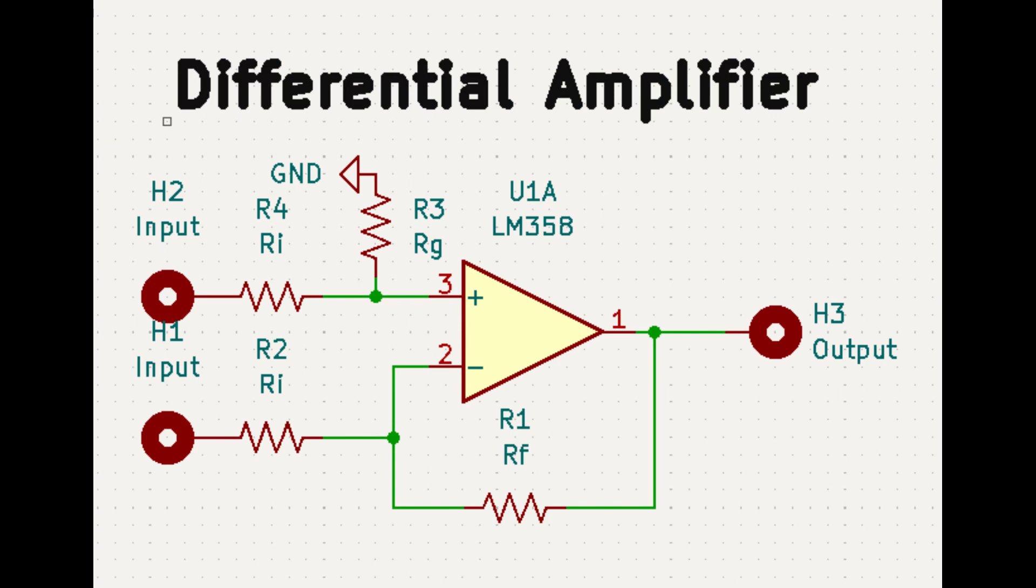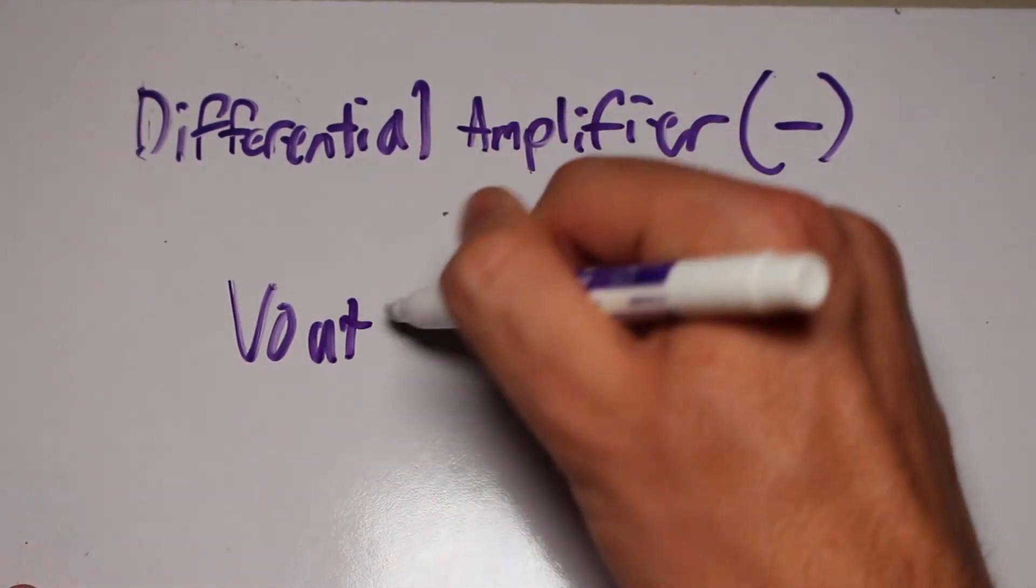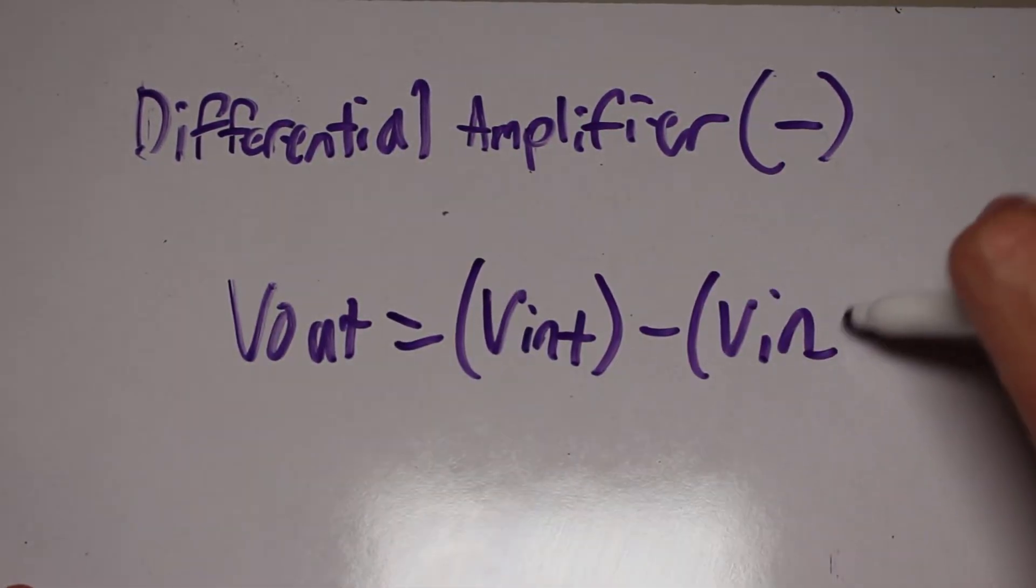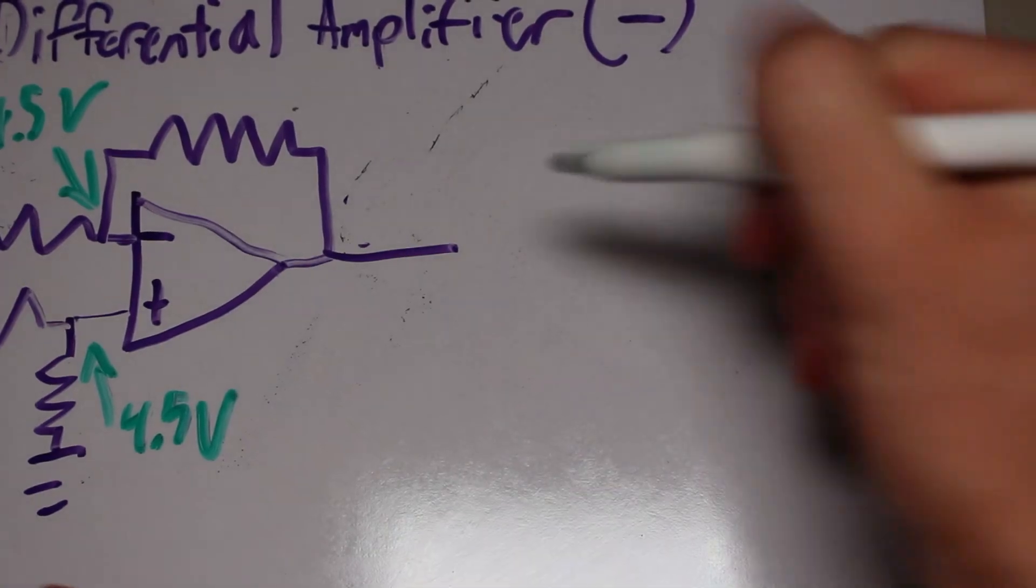I will go over one more example before we dive into building our own op amp, and that is the differential amplifier. The point of the circuit is to basically subtract the inverting input from the non-inverting input. Taking the example where all the resistors are equal, in this case 1k, we can easily calculate the output.